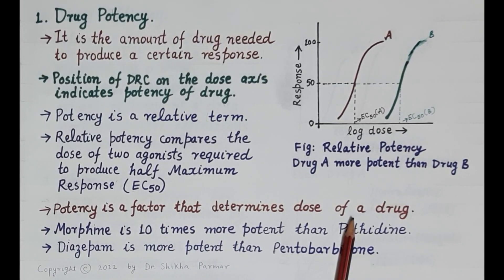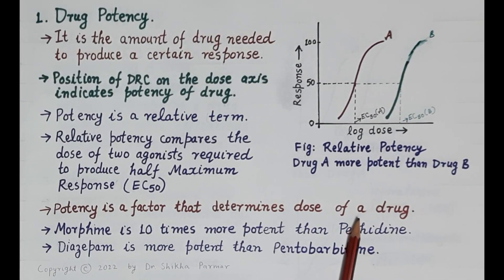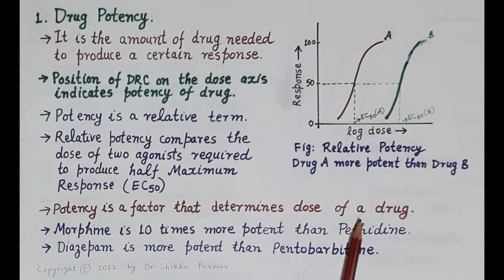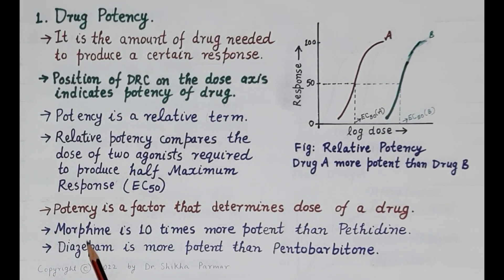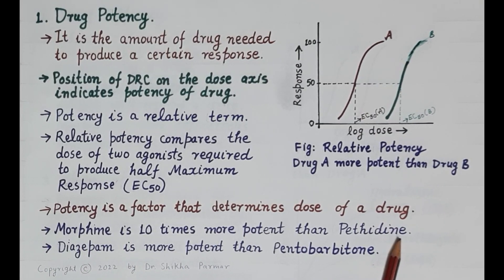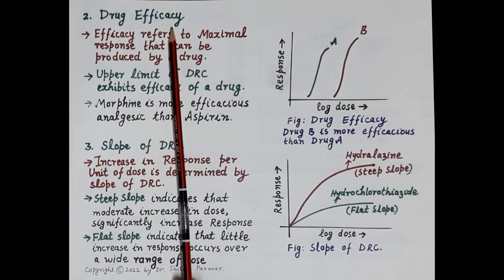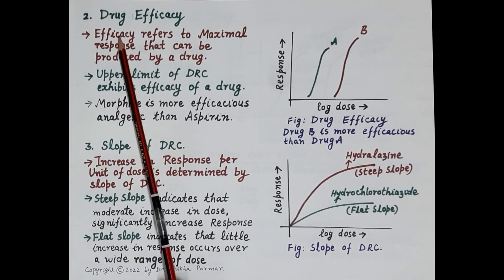Let's understand potency with examples. Morphine and pethidine are both opioid analgesics — important painkillers. Morphine produces a response at a much lower dose compared to pethidine; morphine is 10 times more potent than pethidine. Another example: diazepam is more potent than phenobarbitone.